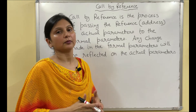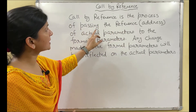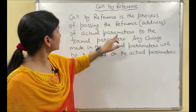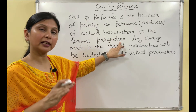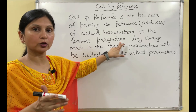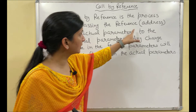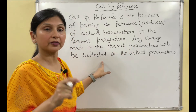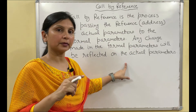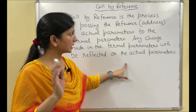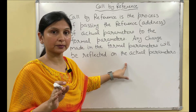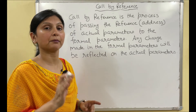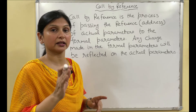Call by reference is the process of passing the reference, or address, of actual parameters to the formal parameters. Unlike call by value where we pass a copy, here we pass the address. Therefore, any change made in the formal parameter will be reflected in the actual parameter.